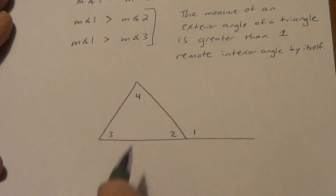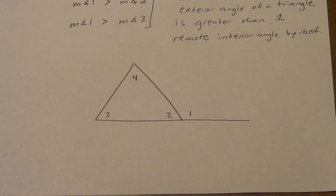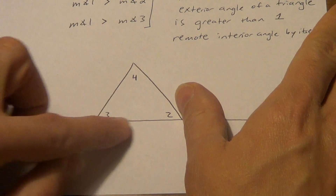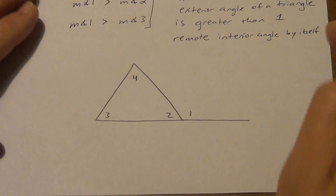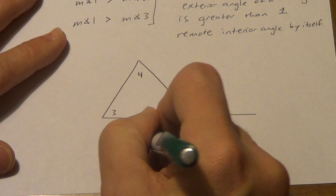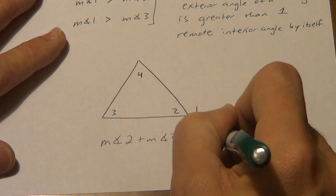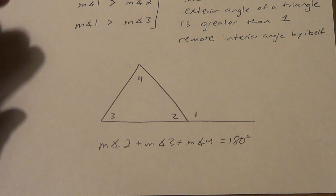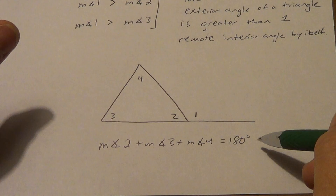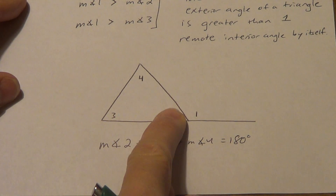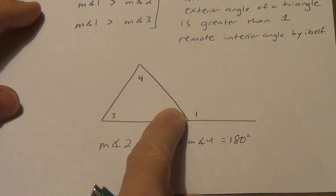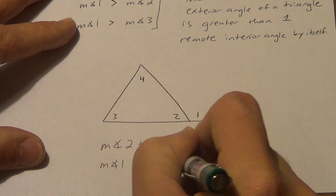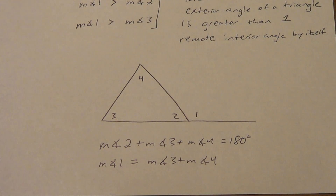Let's look at a couple quick examples. In this picture, I have four angles marked, and there's a lot of information you should know. First, if we ignore angle one, what do you know about these three angles in any triangle? All three angles add together to equal 180 degrees — the measure of angle two plus the measure of angle three plus the measure of angle four equals 180 degrees. That's the triangle sum theorem. Now, what do we know about angle one, three, and four? The exterior angle theorem says the measure of angle one equals the measure of angle three plus the measure of angle four.